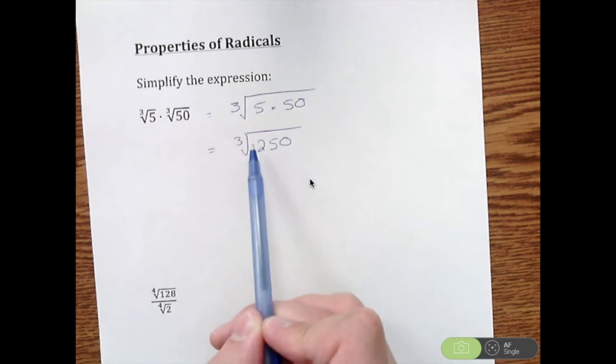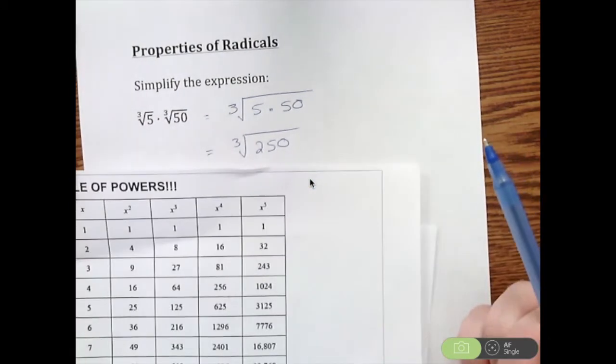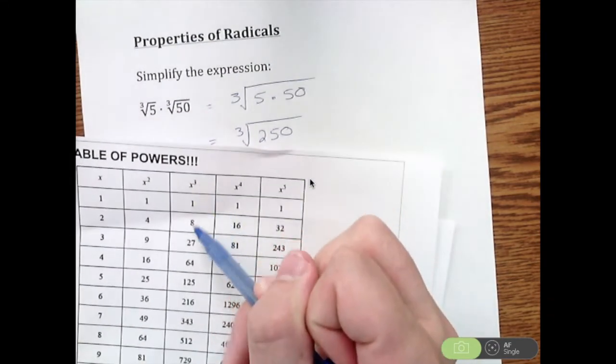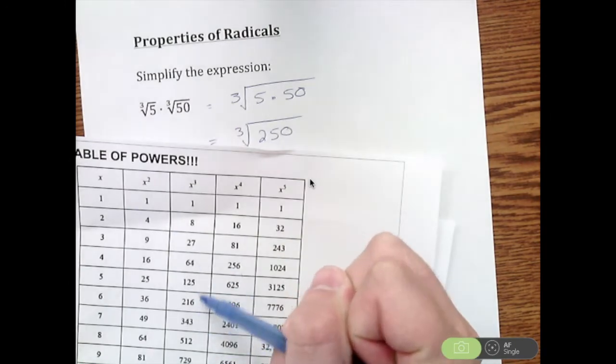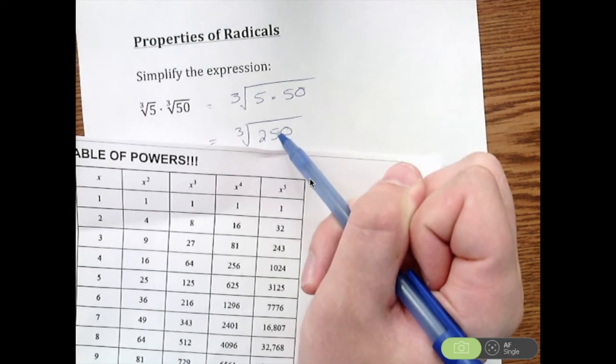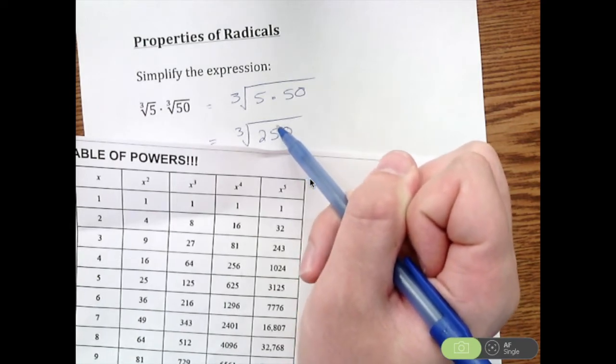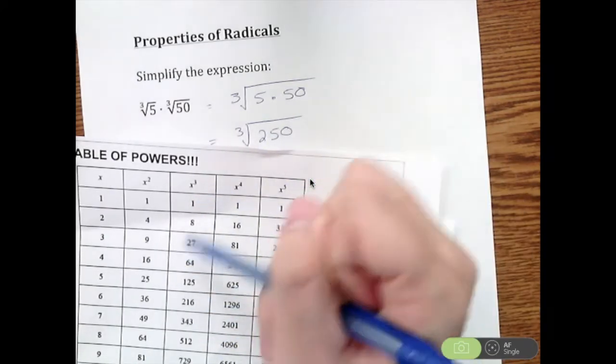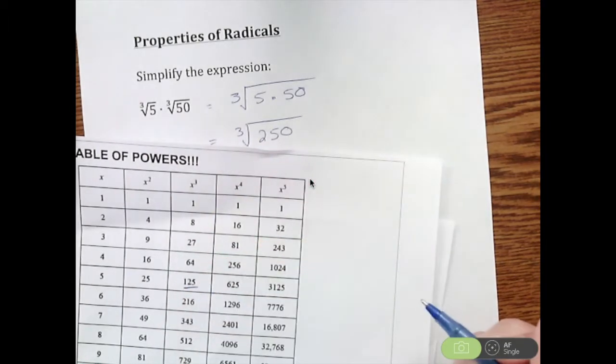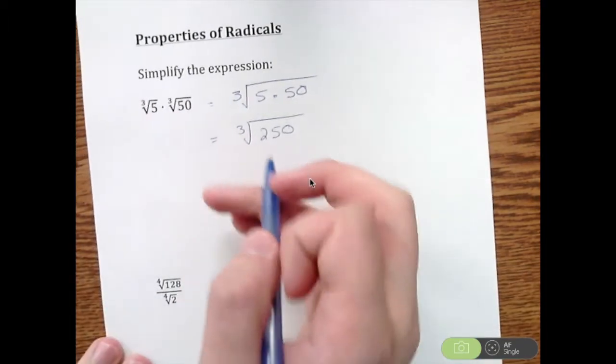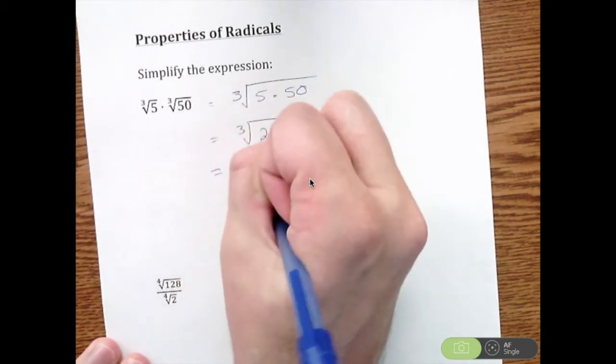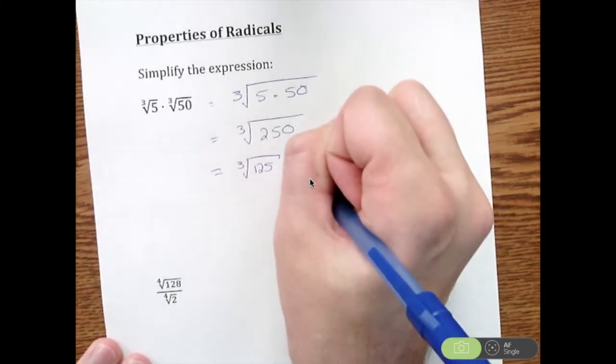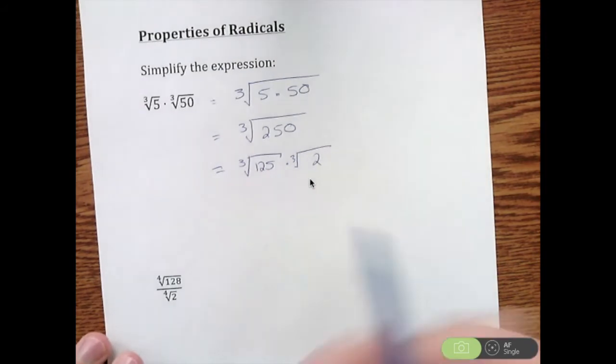Using the table of powers, I'm in the x to the third column looking for 250. I don't see it, so it's not a perfect cube. I'll look for the largest number in this column that divides into 250. The largest number is 125, so I'll break this down as 125 times 2.